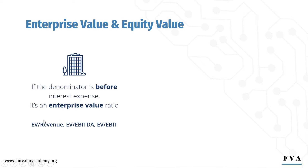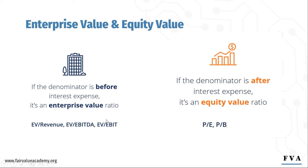You can derive from them EV/Revenue, EV/EBITDA, and EV/EBIT multiples. Conversely, when you're working with net income, since it is after interest expense, it's due only to equity holders. Hence it's an equity value multiple, and you can derive price-to-earnings and price-to-book multiples. The price-to-book multiple is typically used to value financial services companies like banks and insurers, but we'll talk about that later.